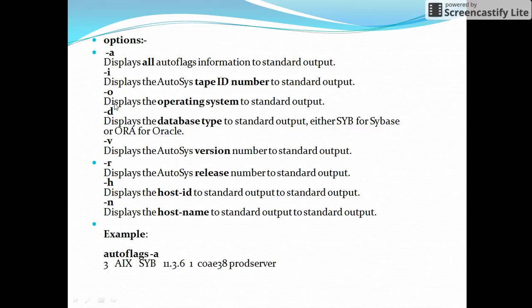If you go with option -o, it will display the operating system on which the autosys server has been installed. Here the OS is AIX, which is a version of Unix.